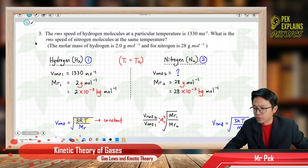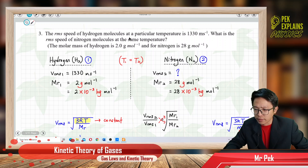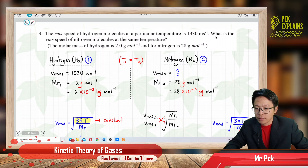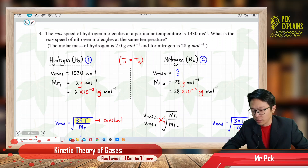Now let us look at question 3. The root mean square speed of hydrogen molecules at a particular temperature is 1330 meters per second. What is the root mean square speed of nitrogen molecules at the same temperature?